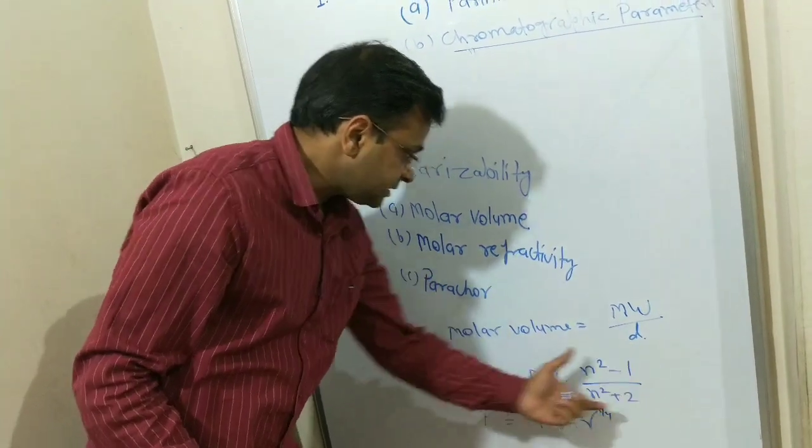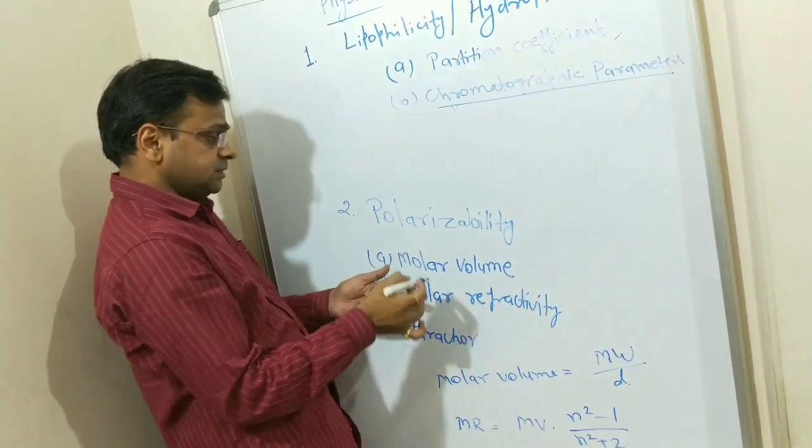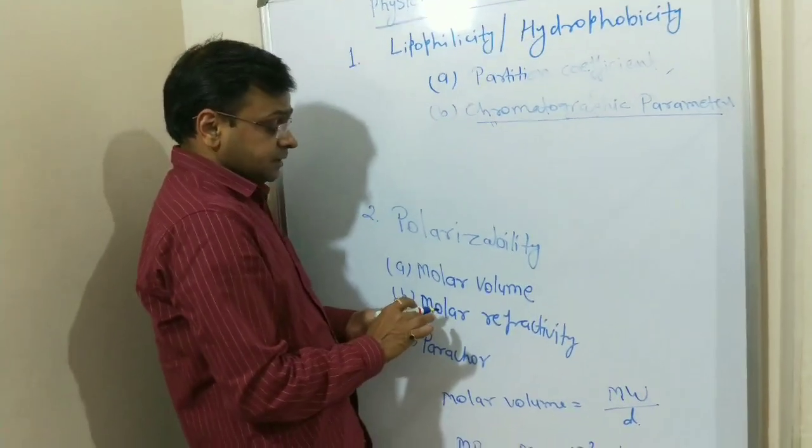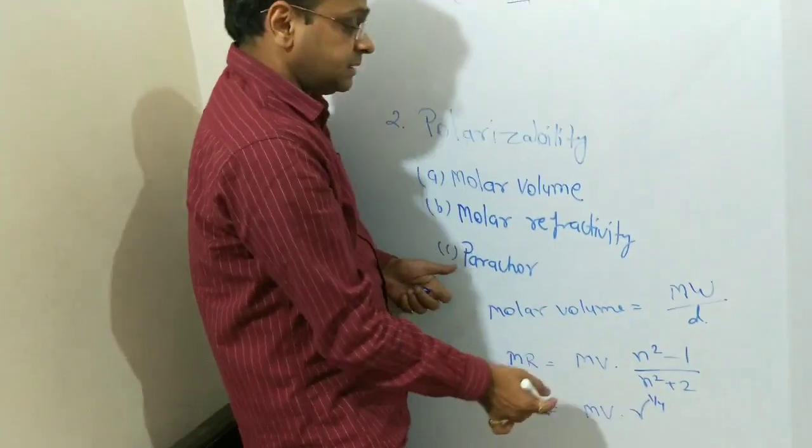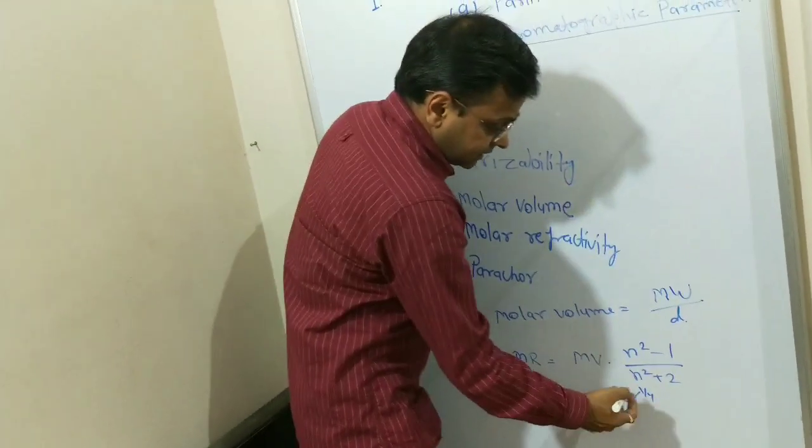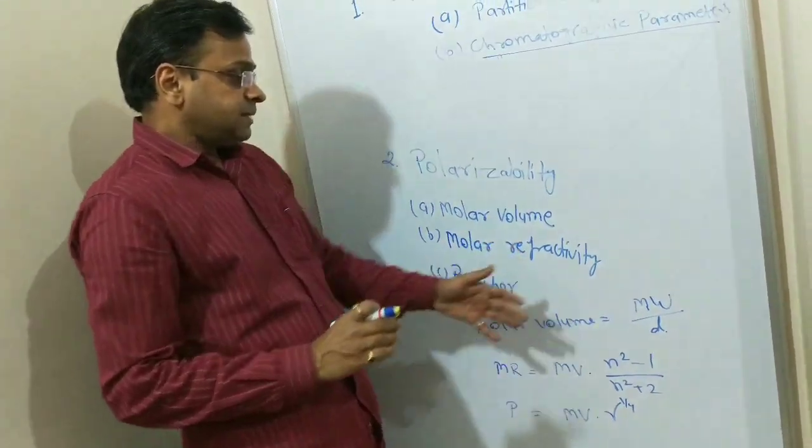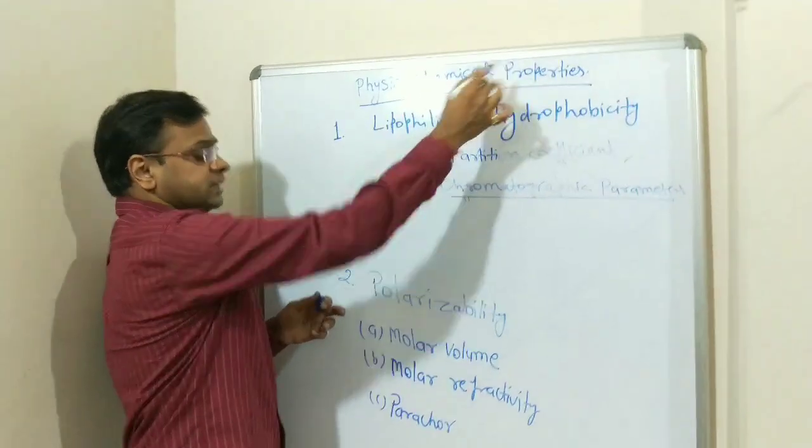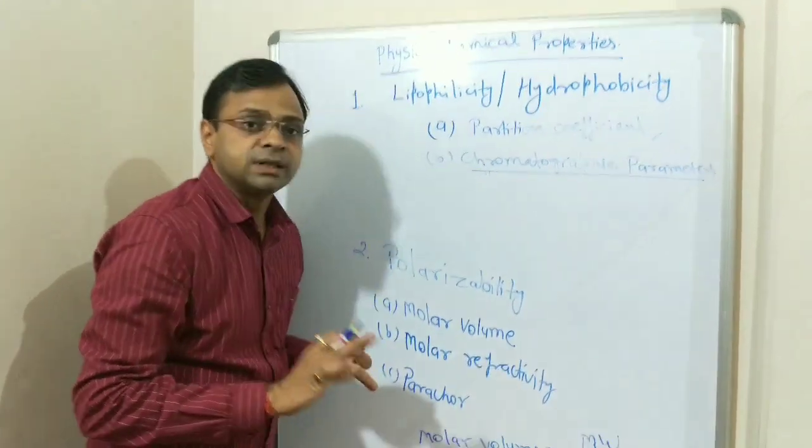So this is the relation between these three. If we know any property, suppose molar volume, refractive index or gamma, surface tension, if we know any of the property, we can formulate, we can keep that value in the formula and we can estimate the physicochemical parameter for our QSAR model.